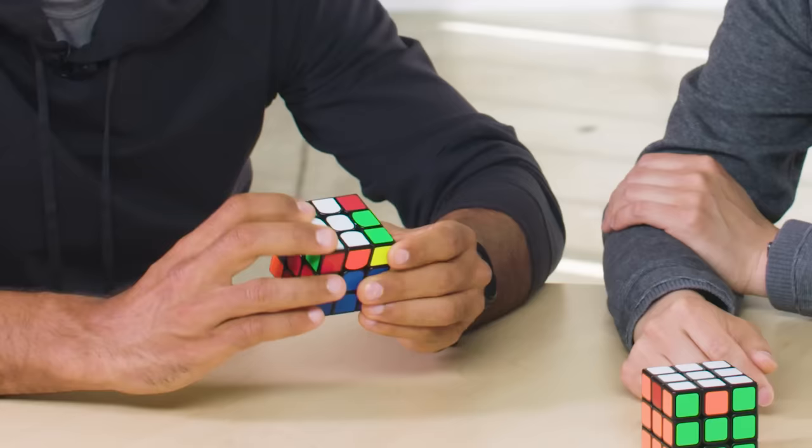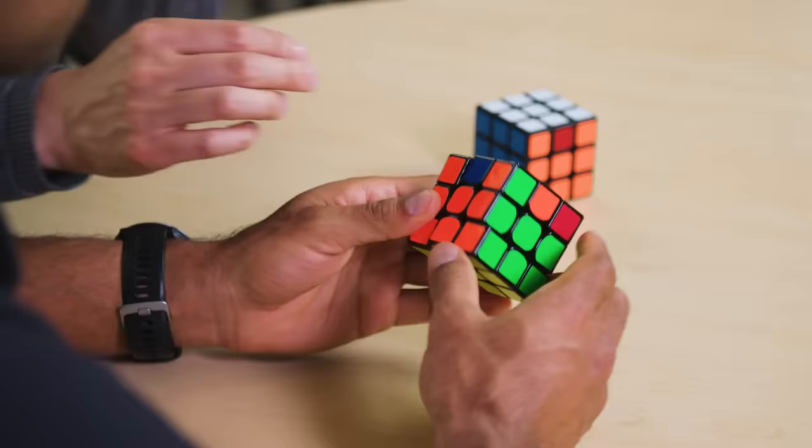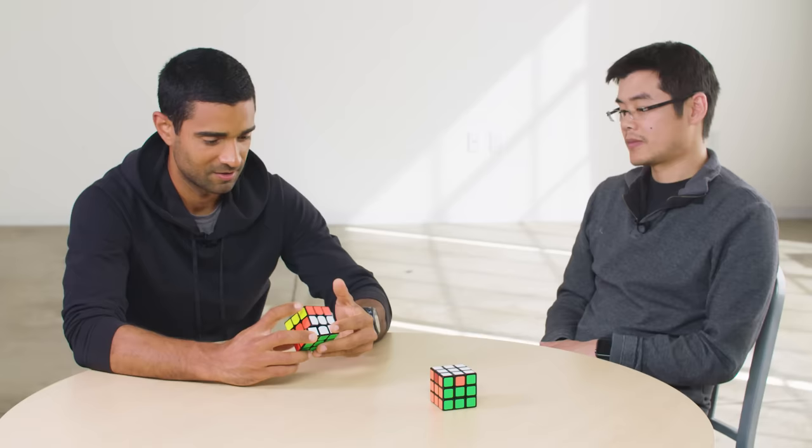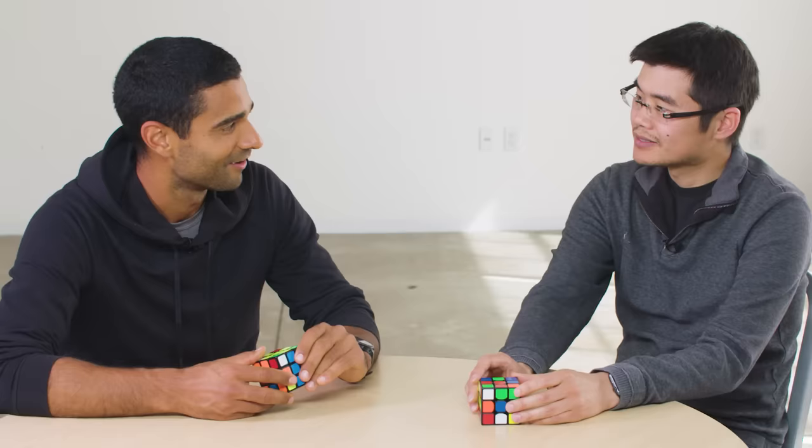So Mao taught me a method for solving the cube that he shows to beginners. Following his instructions, it took me 45 minutes to solve the cube for my very first time. I think if you spent the next two weeks on this, you'd probably get your time down to about 90 seconds.